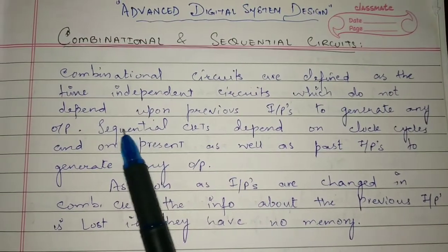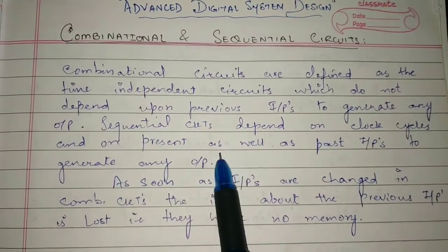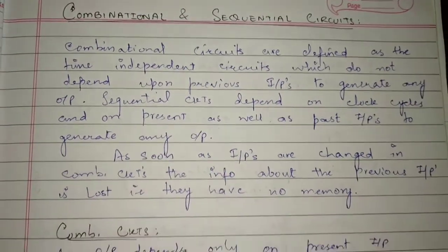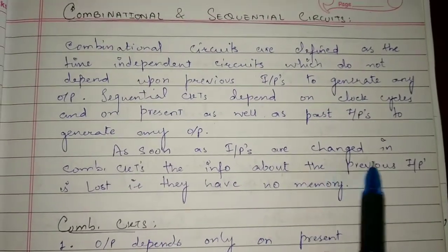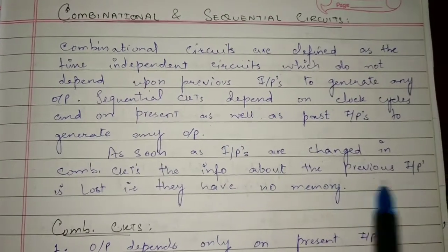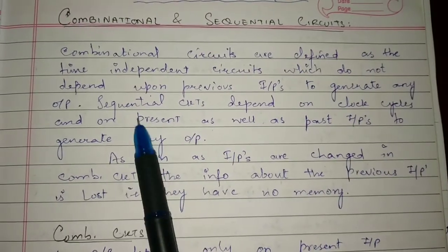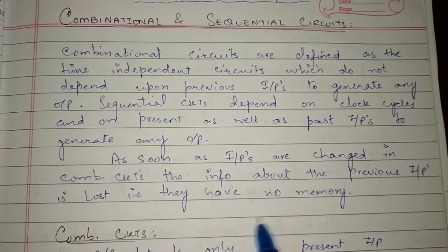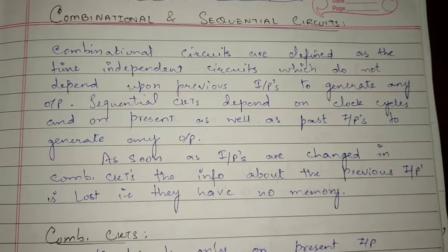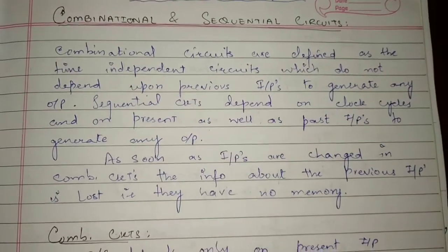On the other hand, sequential circuits depend on clock cycles and on present as well as past inputs to generate any output. As soon as inputs are changed in combinational circuits, the information about the previous inputs is lost — that is, they have no memory. Whereas sequential circuits have memory.